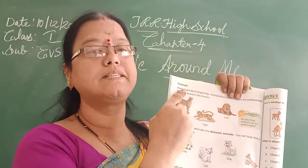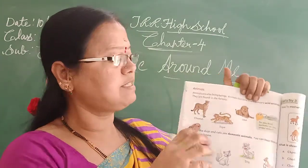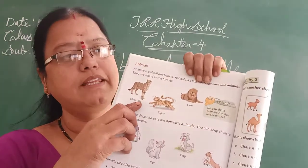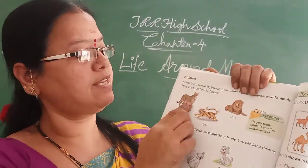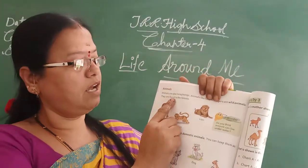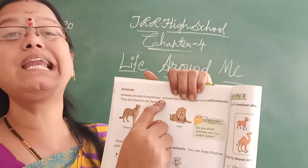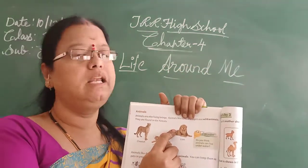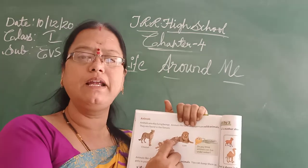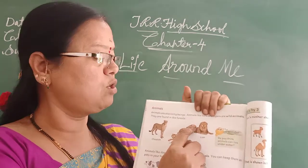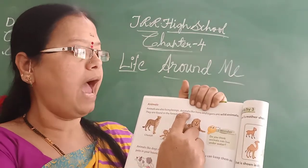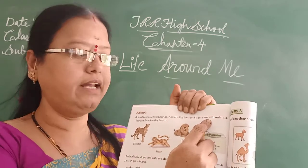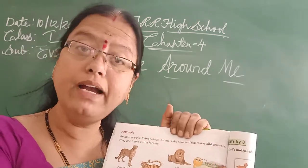See here — animals. Look at these pictures. What kind of animals are there? Animals are also living beings. Plants are also living beings.